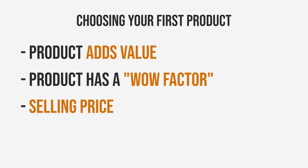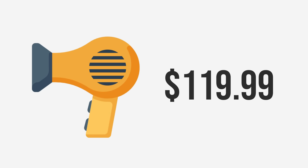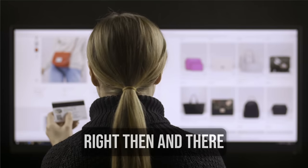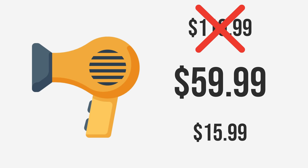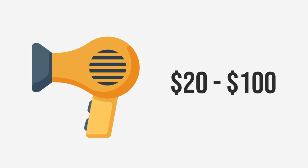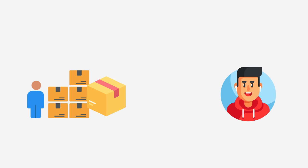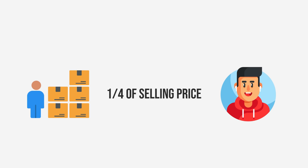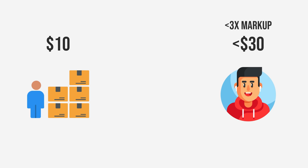Another factor to consider is the selling price. Many people on social media generally don't buy expensive products from brands they haven't seen before, so we want to sell at a price low enough that people are willing to take out their credit card right then and there without overthinking due to a high price. At the same time, don't sell something too cheap because it'll be hard to make a profit after all the expenses. A good selling price to shoot for is $20 to $100. For anything above $100, it's going to be less likely for people to do an impulse purchase. To be profitable, we want to get the product from our supplier for a third, or better yet a quarter, of the selling price — a 3x or even 4x markup. So if we get the product for $10, we want to sell it for $30 to $40.